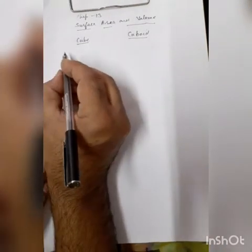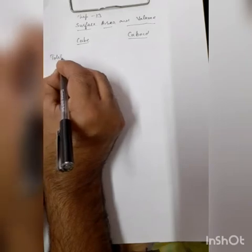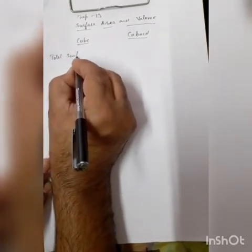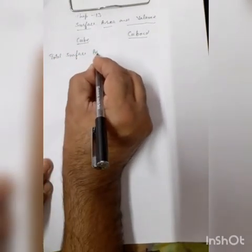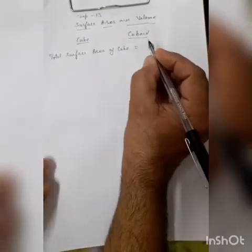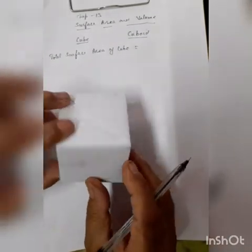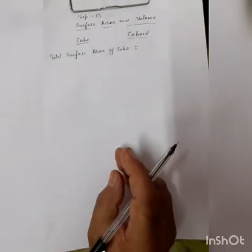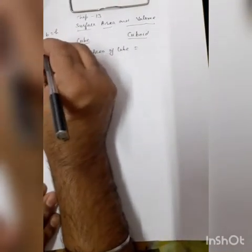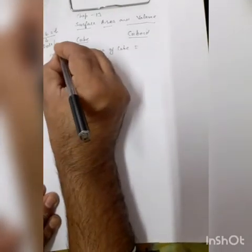Now there are two types of surface areas: total surface area and lateral surface area. First of all we will find the total surface area of a cube. A cube has six faces, and since length, breadth, and height are equal, we refer to each dimension as the side or edge.